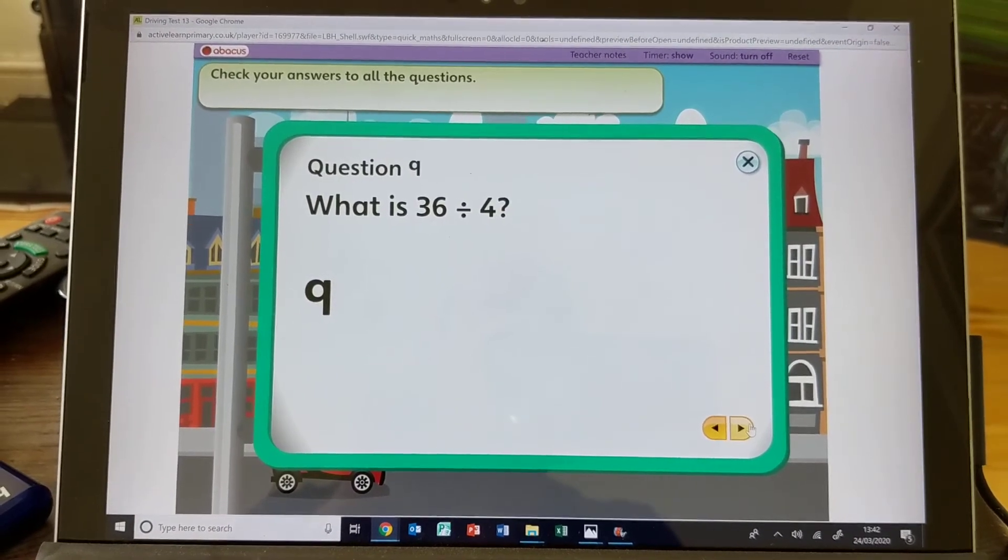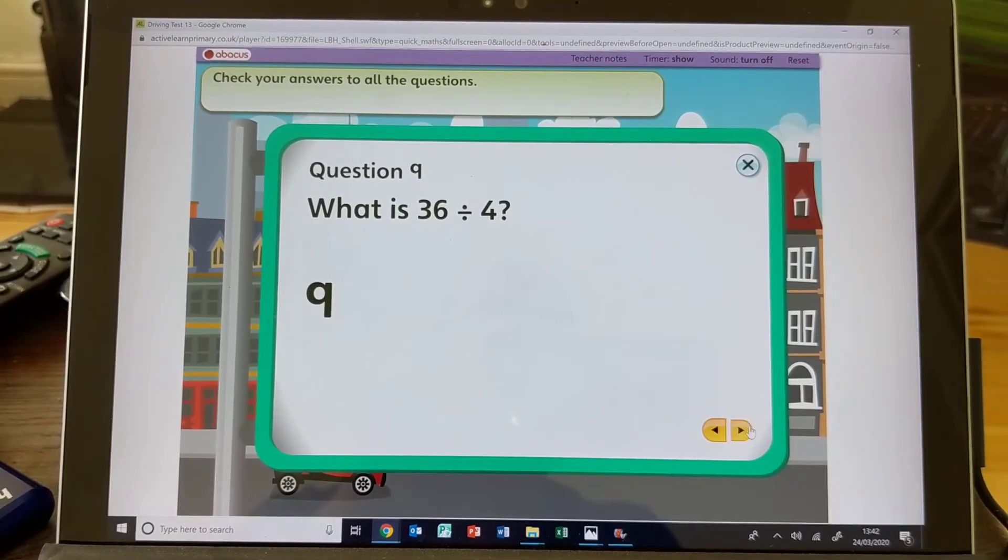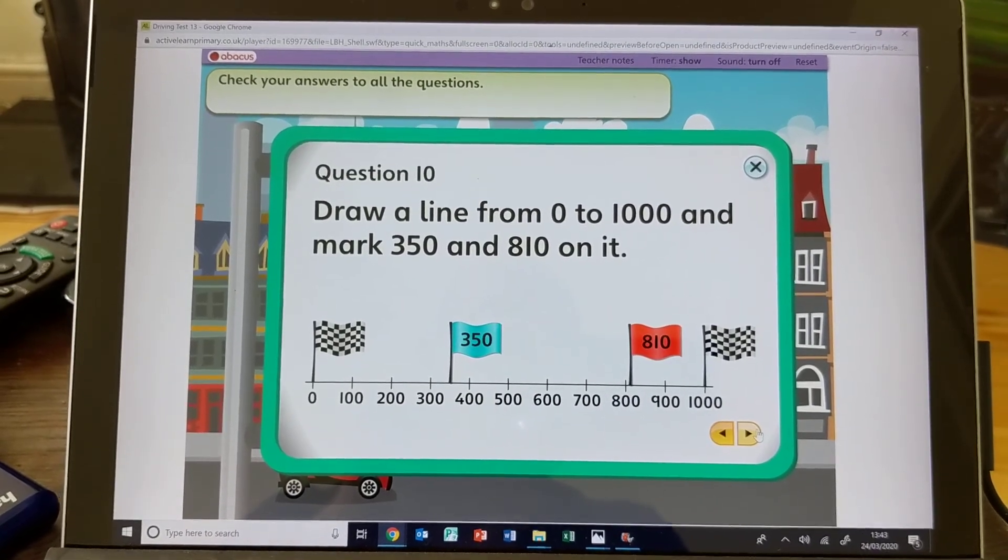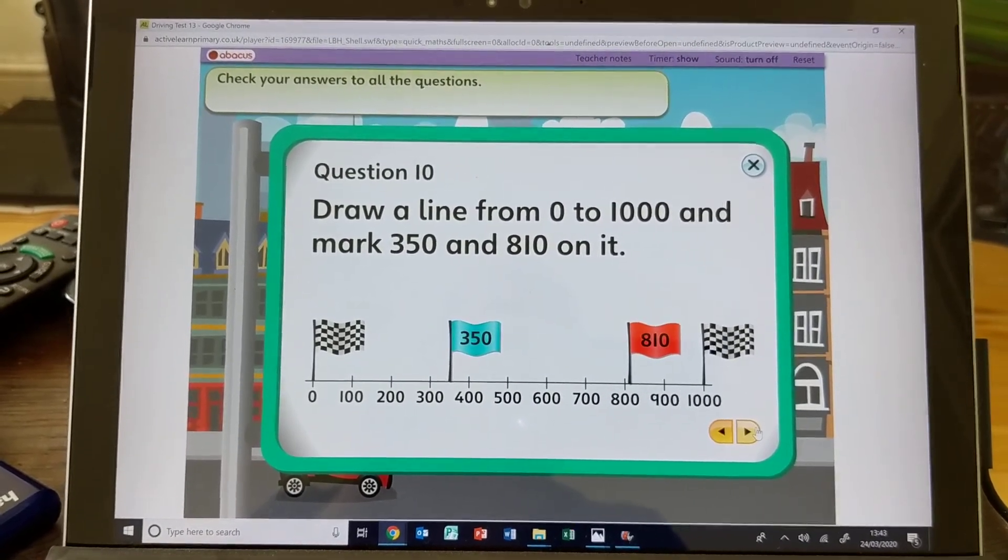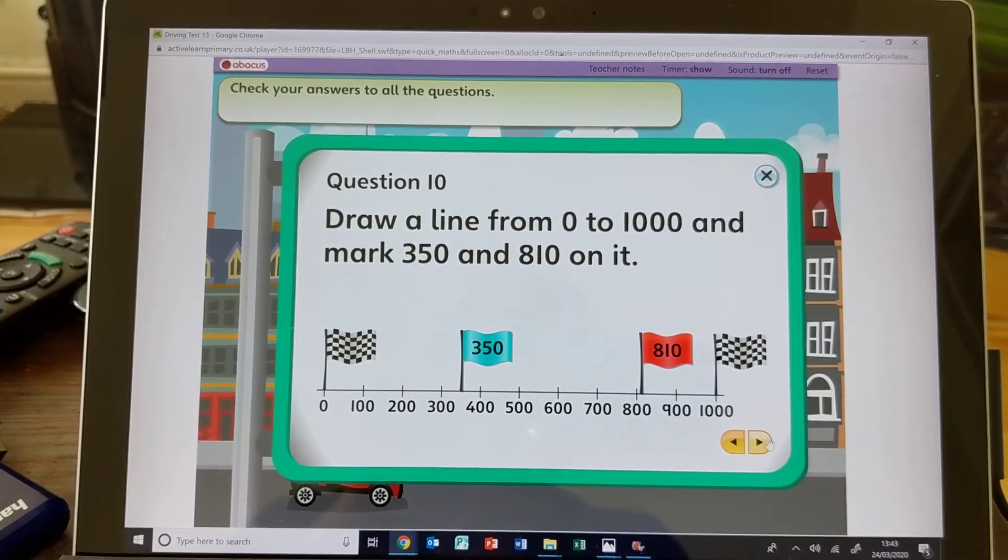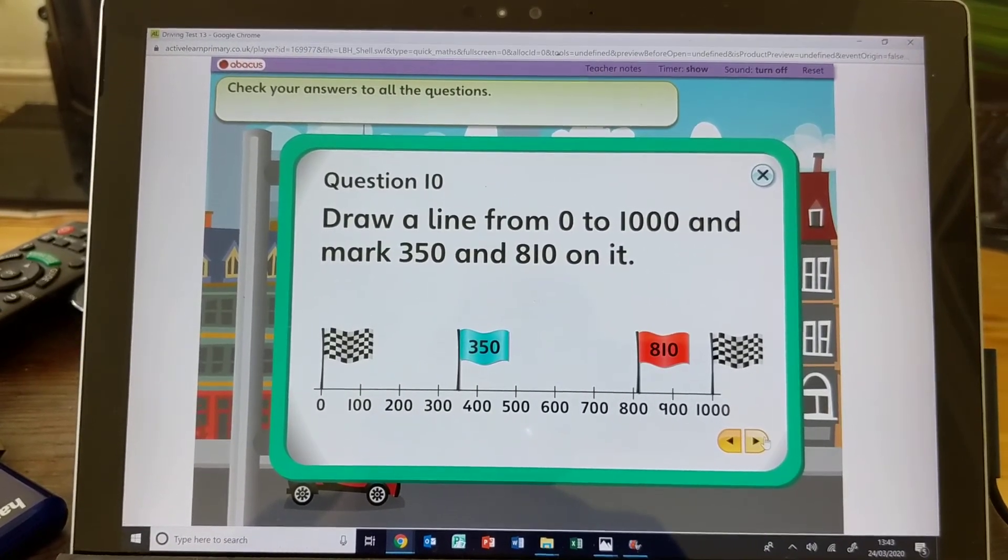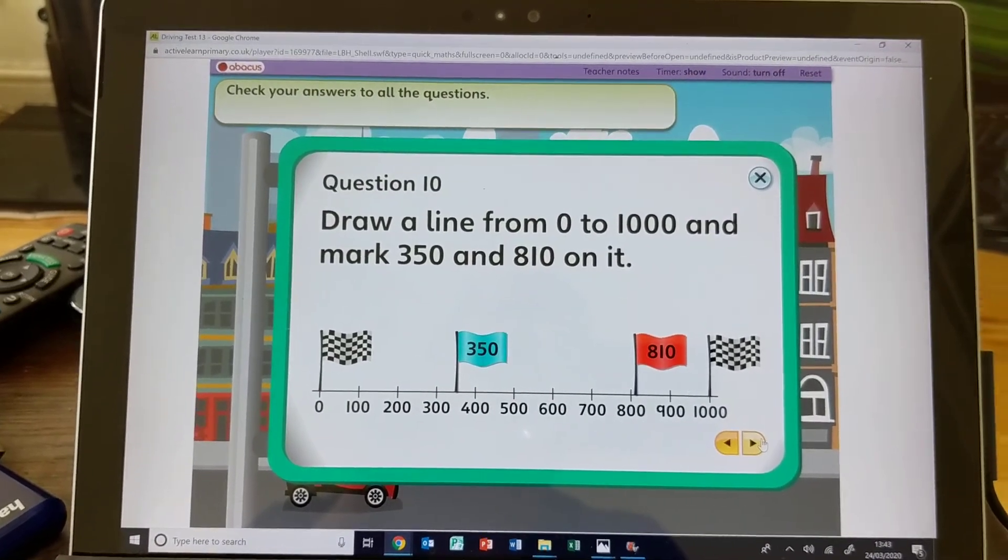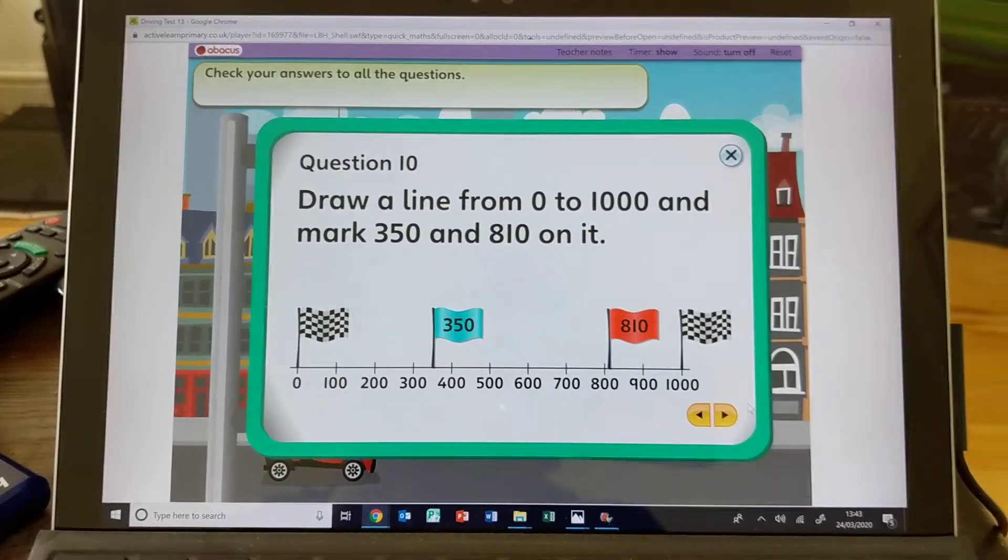On your number line, 350 and 810. So 810 is kind of 3/4 of the way along. As long as you've got it roughly near where those two flags are, I'm sure that will be fine.